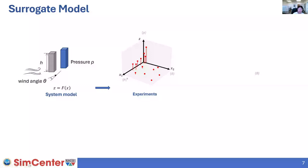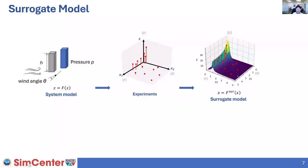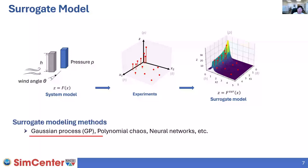We then interpolate this dataset so that when we want to get the response for a new configuration, instead of running extra physical or computational simulations, we can interpolate the existing data and read the value instantaneously. There are different ways of creating this kind of regression model, which we call a surrogate model, and we chose the Gaussian process model.